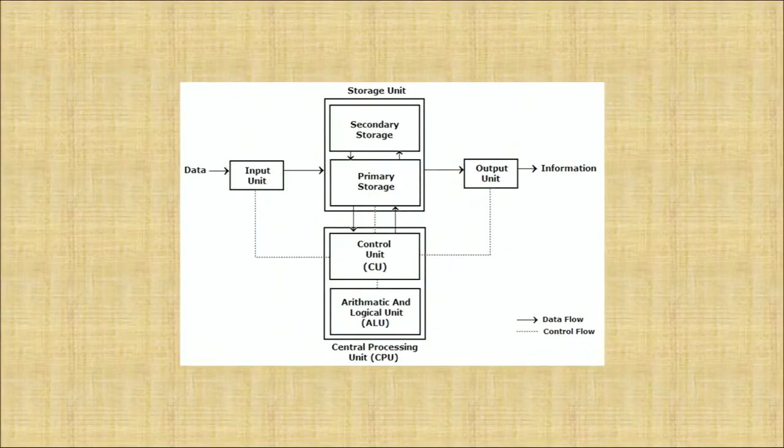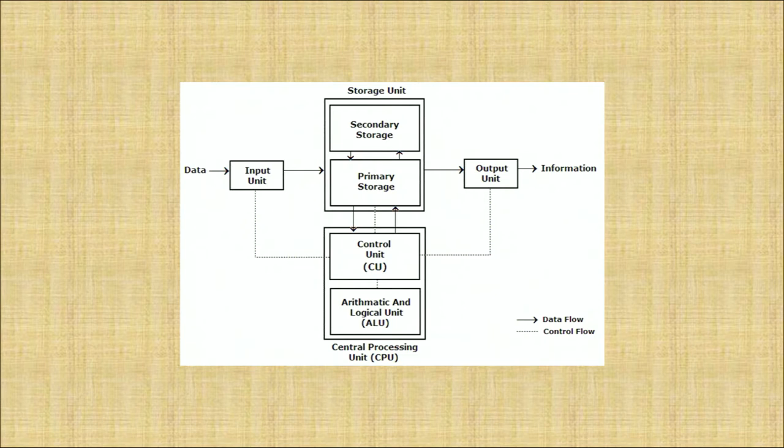The computer system works as follows: when we put data into the input unit, the computer processes it through storage and the CPU, then generates output called information. Data is raw information — what we collect and that is not meaningful is called data. When it is given meaningful form, it is called information. Therefore, the computer helps an accountant process accounting entries from raw data into meaningful information.